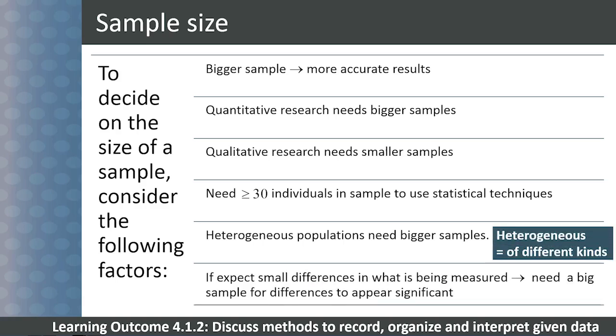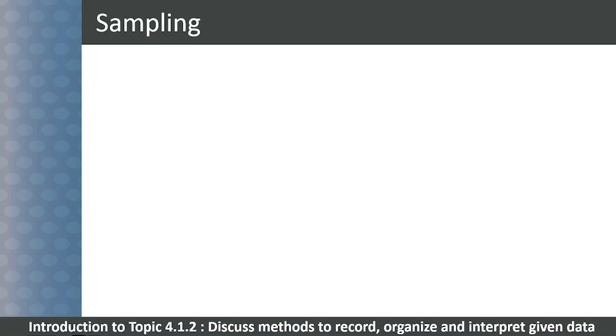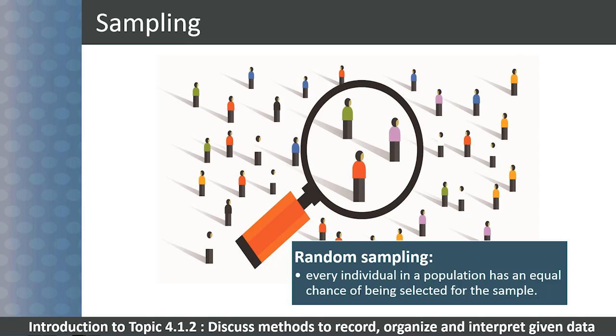If you are trying to examine small differences in a variable, then the sample size will have to be larger to show the difference as being significant. It is very important to conduct random sampling, which means that every individual in a population has the same chance of being selected for the sample.